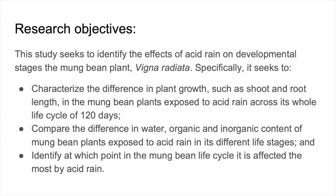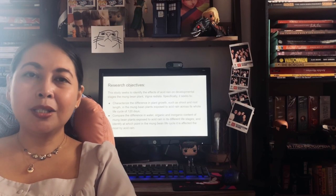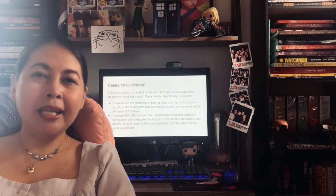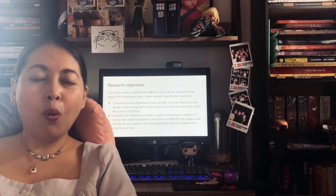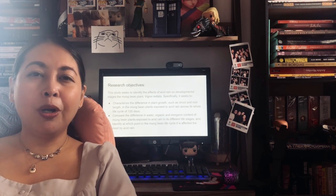We defined the length of the study — approximately 120 days, plus or minus the additional days needed to perform the chemical tests. The specific chemical parameters that we wanted to measure were basically the water content, organic content, and inorganic content of the plant, and also that we want to identify at which stage in the life cycle of the mung bean plant that the acid rain will start to affect. So this makes our objectives very clear, and at the same time we are also avoiding over-promising to our audience.